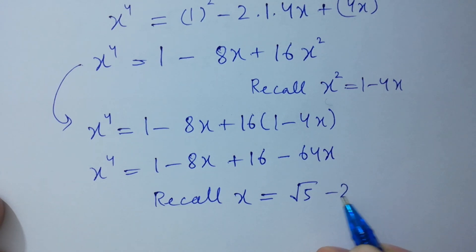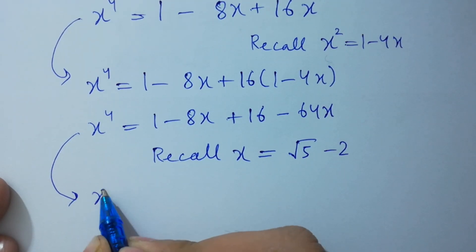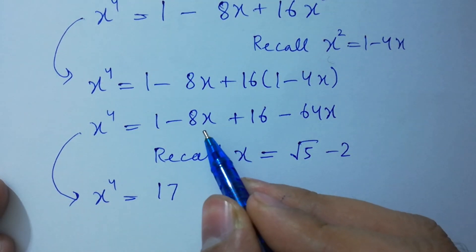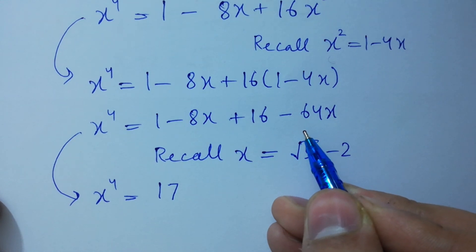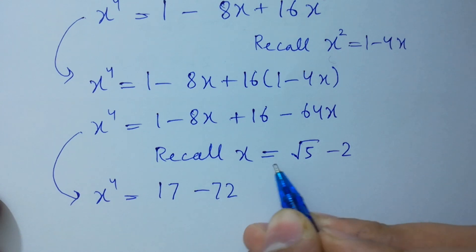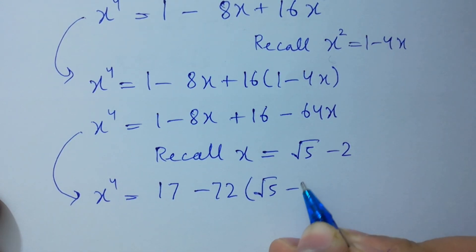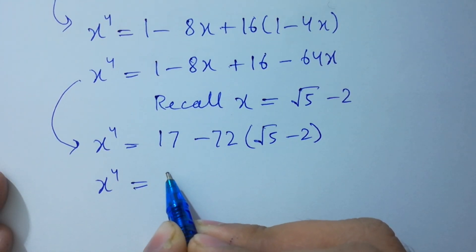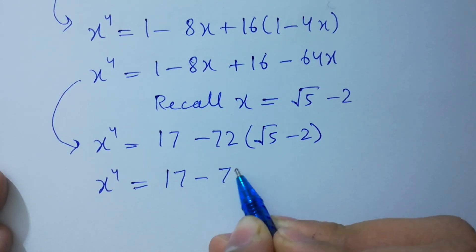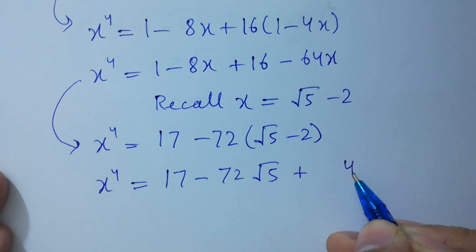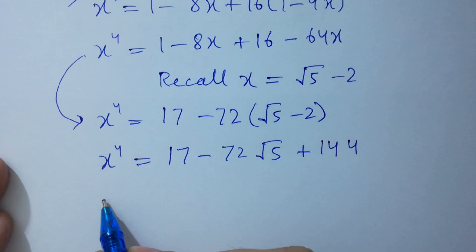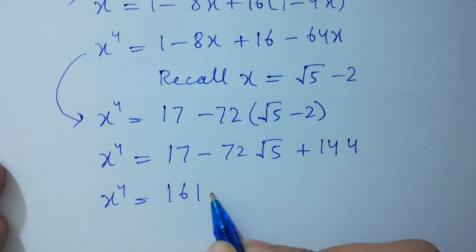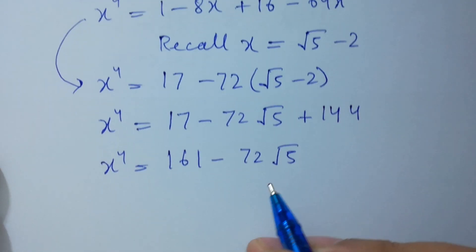Substituting x = square root of 5 minus 2: x⁴ = 17 - 72x = 17 - 72(square root of 5 minus 2) = 17 + 144 - 72·square root of 5 = 161 - 72·square root of 5.